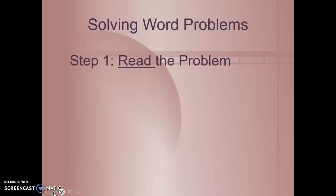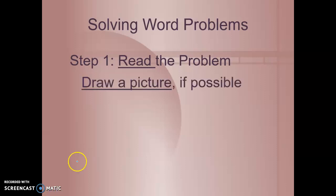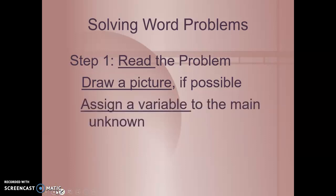Let's take a look at solving some word problems. Step 1, we're going to read the problem. Step 2, draw a picture if possible. If it's something that we can draw a picture of, we'll create a diagram. And assign a variable to the main unknown. To whatever it's asking us to find. What percent, what length, what height, we'll come up with a variable.